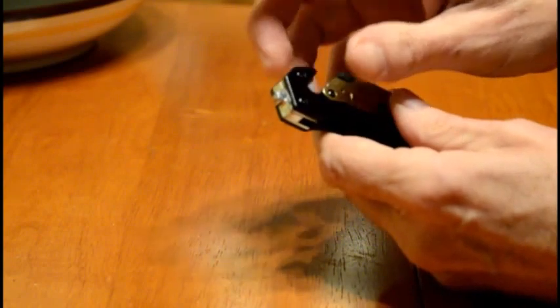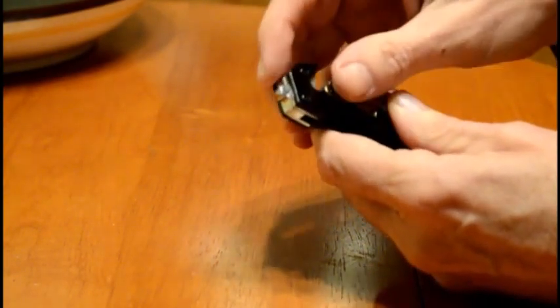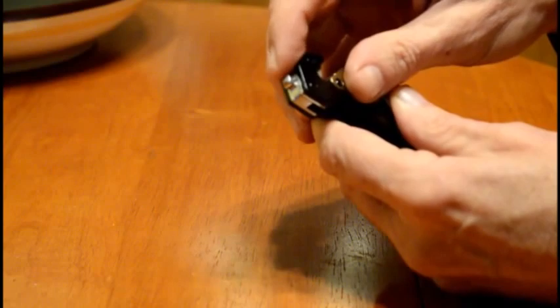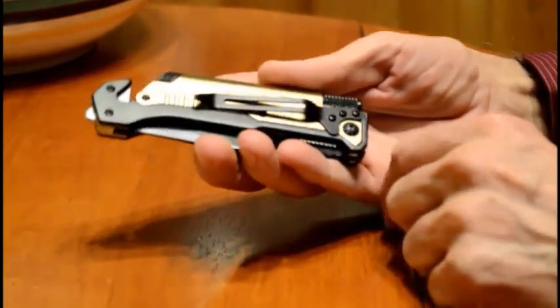So if God forbid something like that happens, you keep this in your glove box, grab it, and you can open it. You can open the window the hard way. Another couple of features we have here.